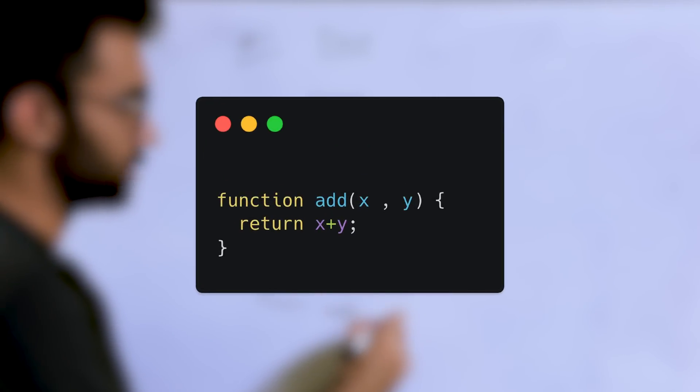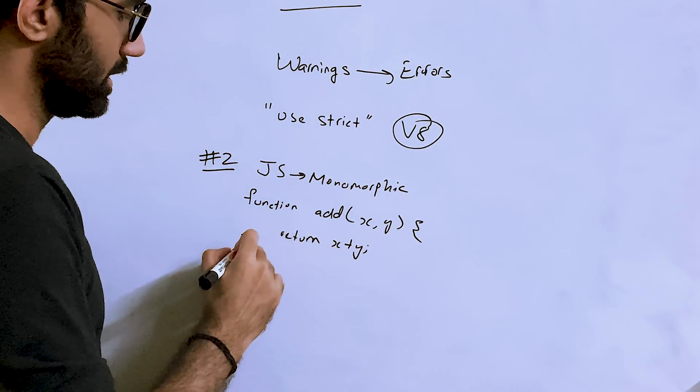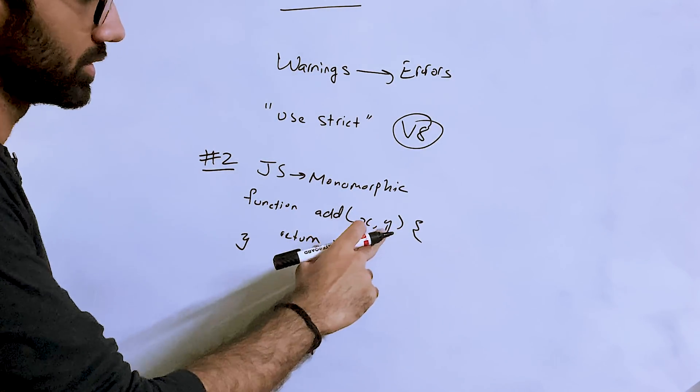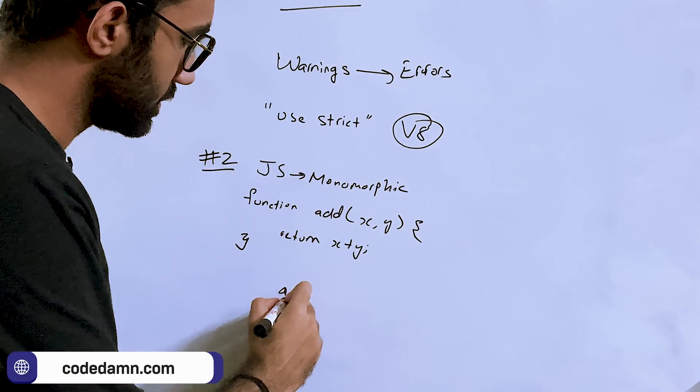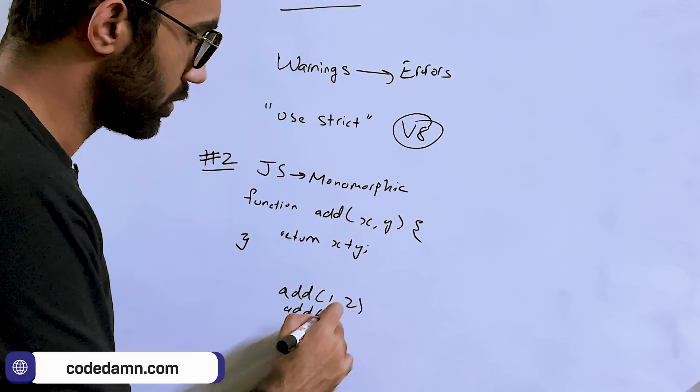Instead of going into definitions, I'm going to give you a very simple example. Let's say you have a JavaScript function named add and you expect two numbers, x and y, and you just return x plus y.